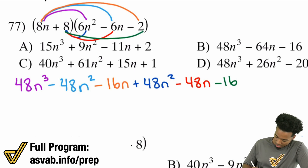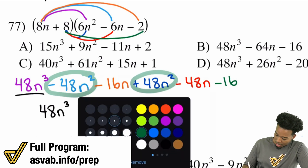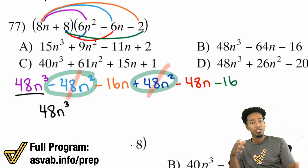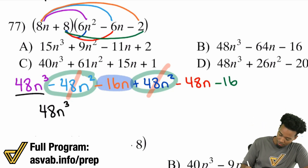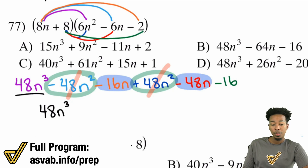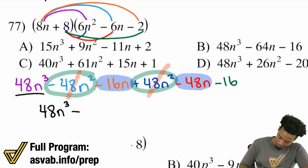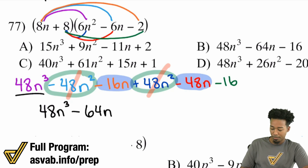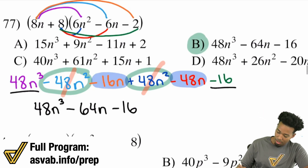Our highest term, 48n³, stays the same. Then negative 48n² and positive 48n² cancel each other out — goodbye. For the n terms: negative 16n minus 48n — going more negative, so we add: 16 plus 48 is 64 — that gives us negative 64n. Lastly, minus 16 has nothing to combine with. The final answer is B: 48n³ minus 64n minus 16.